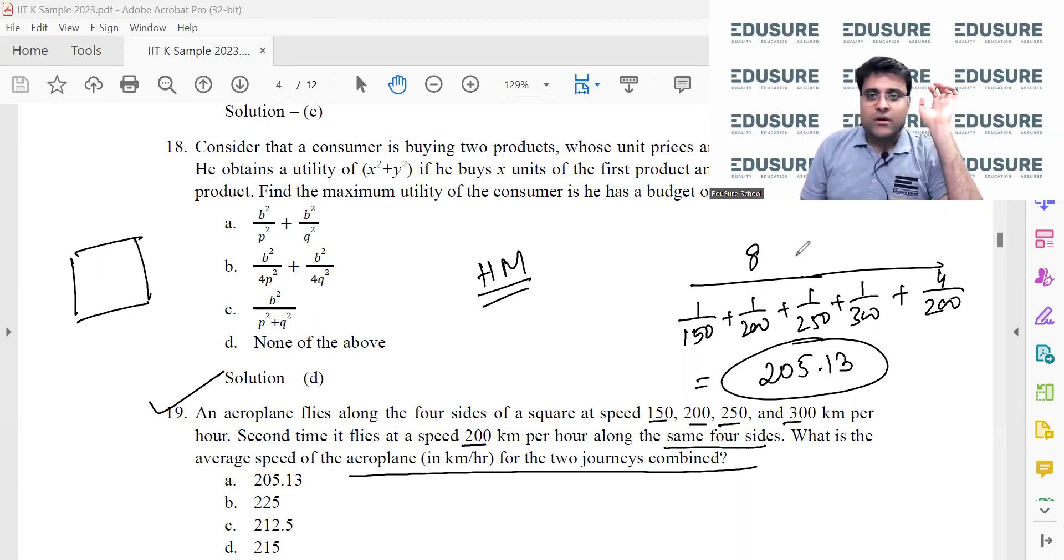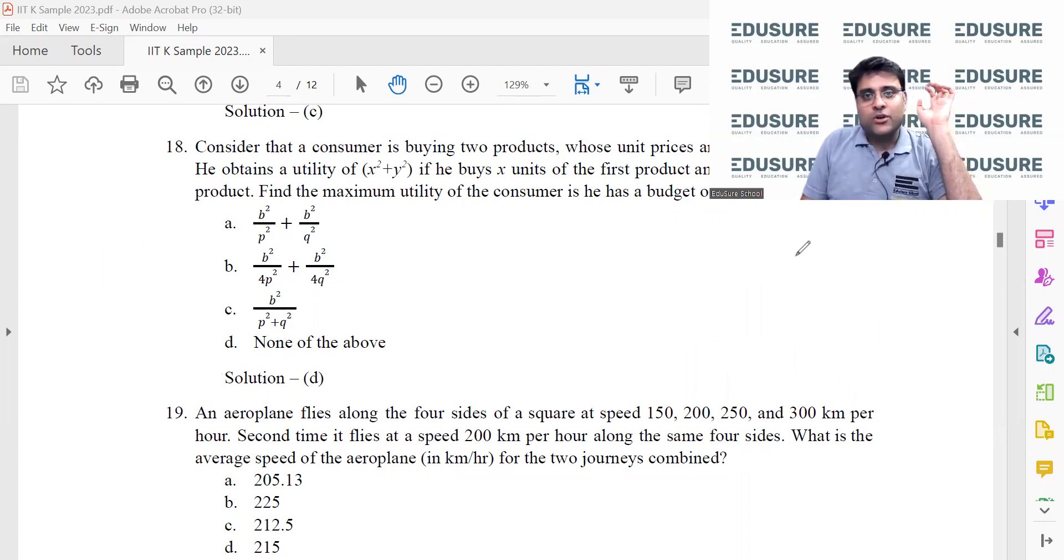So if you did not know that you had to use harmonic mean in order to calculate, then also it is okay, doesn't matter. Then also you can easily do it. Let the sides of the square be d.